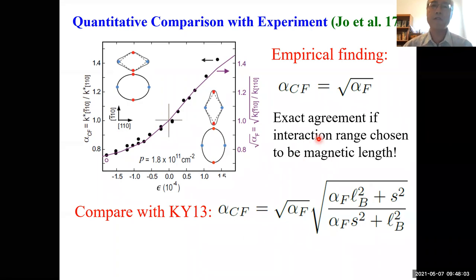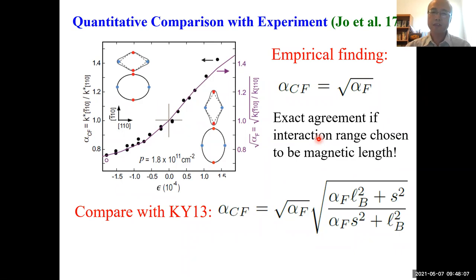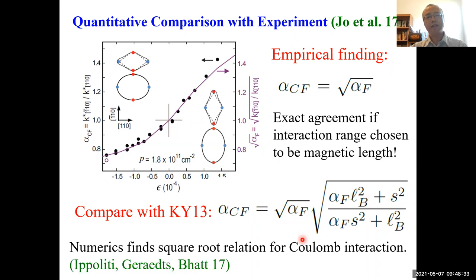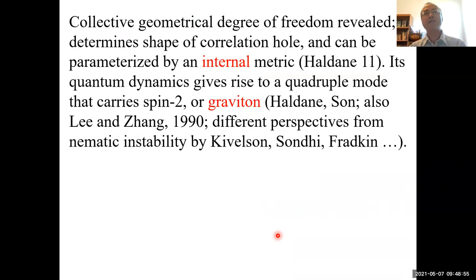Now, of course, the actual Coulomb interaction is not even close to the Gaussian interaction used in this simple model, but it's very reasonable to actually associate the magnetic length as its corresponding length scale, because once you project the interaction to the lowest Landau level, the only length scale there is indeed magnetic length, and a detailed numerical study from the same group also actually finds very accurate square root relation for the Coulomb interaction. I think it's fair to say that we have indeed seen this quantum Hall geometry and have actually a reasonable quantitative understanding of it.